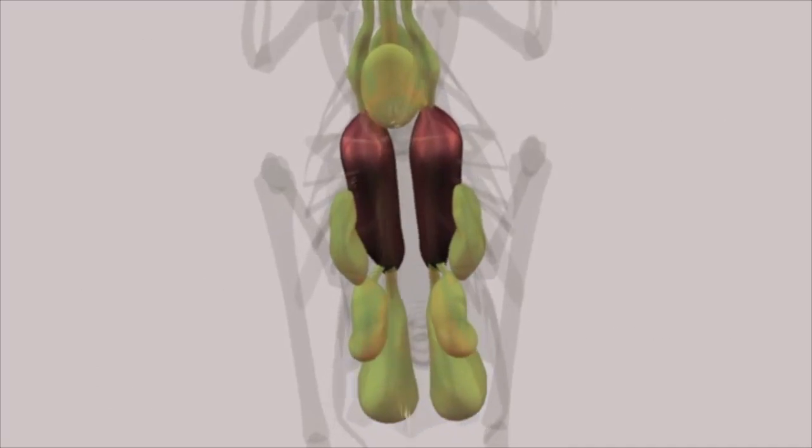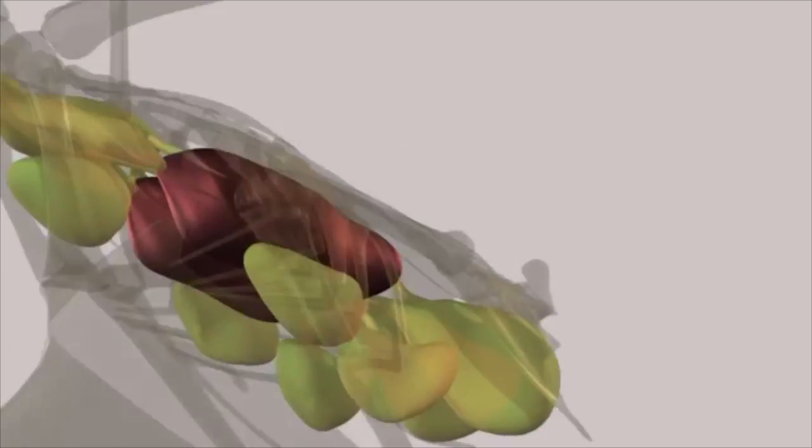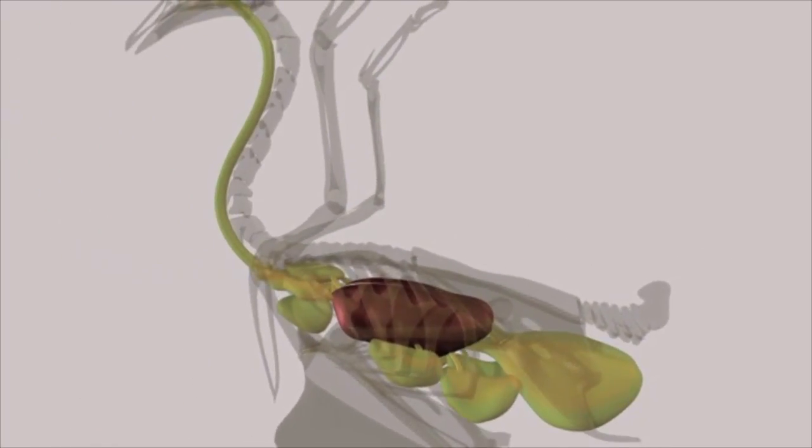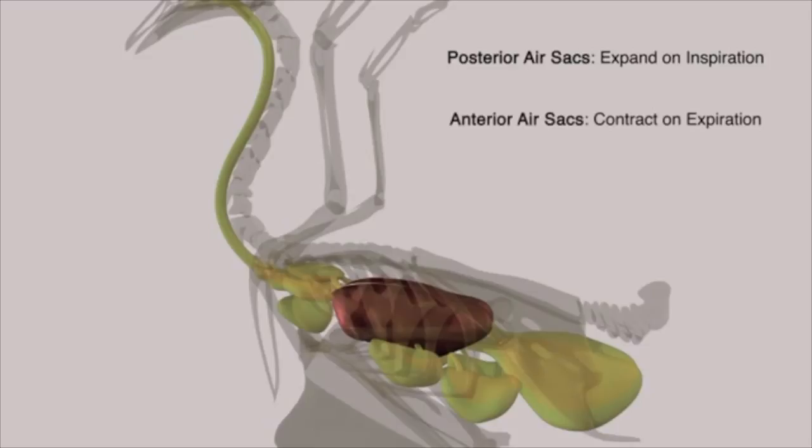All of the air sacs participate to some extent in the respiratory process. All of the posterior air sacs expand on inspiration, while all of the anterior air sacs contract on expiration.